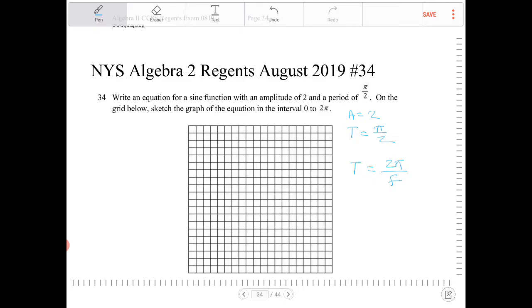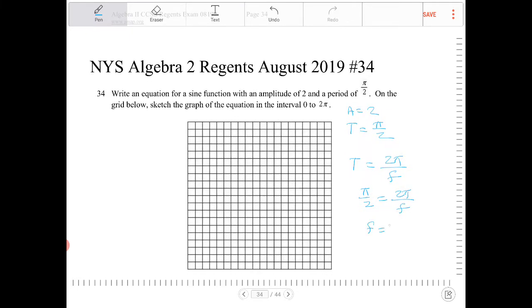So if I take this and the period value that I know, I have pi over 2 is equal to 2 pi over f, I can solve for f. f therefore is going to equal 4.